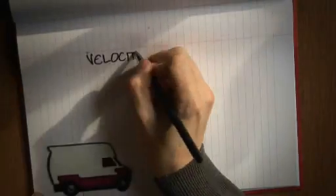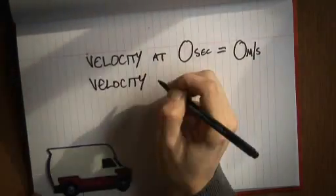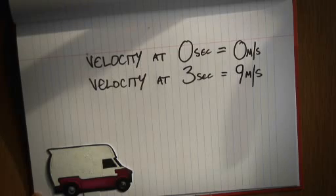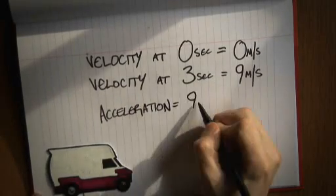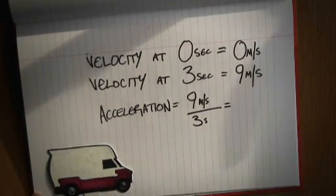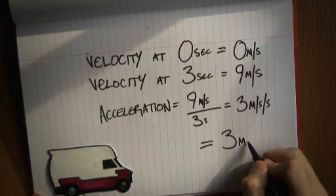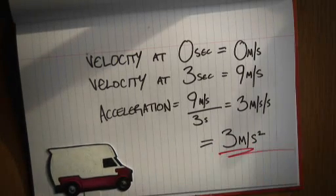So if I was stationary, and three seconds later I'm moving in a straight line at, say, 9 metres a second, I've been accelerating? Yes, that's right. You'll have been accelerating at 9 divided by 3, which is 3 metres per second per second. So 3 metres per second squared.